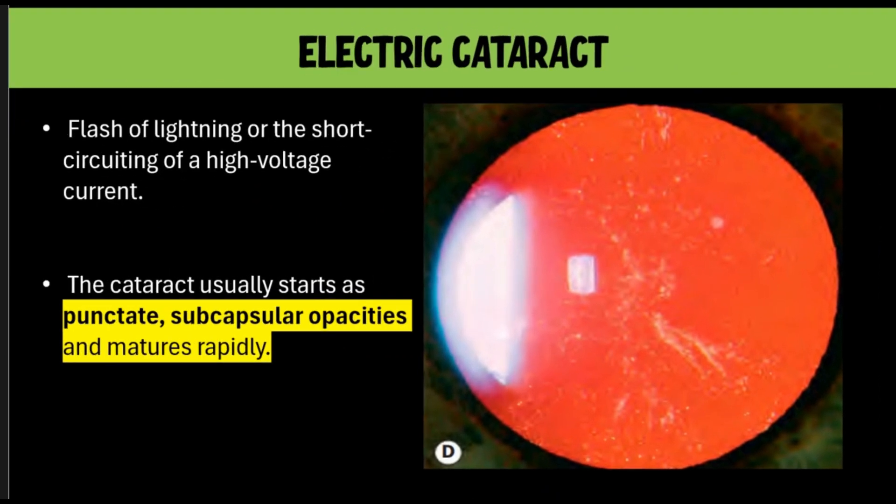We also have electric cataracts. If someone is electrified, the high-voltage current passing through the body damages the lens cells, leading to cataract formation. The cataract typically starts as very fine dot-like opacities just below the capsule — punctate subcapsular opacities — and matures quite rapidly.